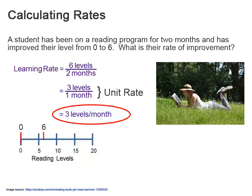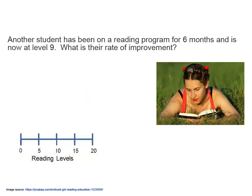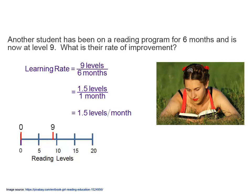This can also be written with a slash. The learning rate of the second student is calculated in the same way. In this case, she has been on the program for six months and has progressed to level nine. This gives a learning rate of 1.5 levels per month.